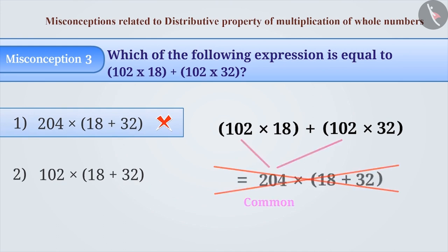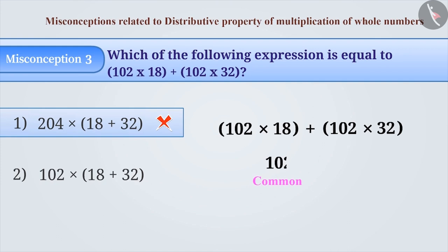The correct understanding is that the common number is written outside the brackets, and the numbers which we multiplied it to are added and written inside the brackets. With this understanding, option 2 is the correct answer.